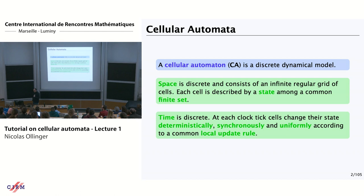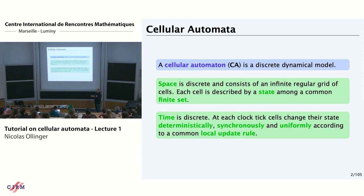It's a discrete dynamical system if you are more of a mathematician, or some kind of automaton if you are more of a computer scientist. You have some space — usually in the classical settings, the space is a d-dimensional grid, and you have cells. What you do is paint the space with states: you put states from a finite set in every cell. Some people prefer to put letters from an alphabet of states; I prefer to put colors.